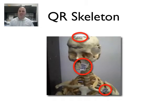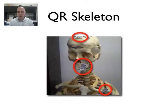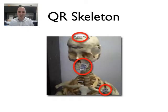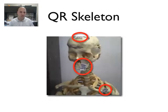I really like this one — it was done by a PE teacher in Australia. He wanted to help his kids have a more interactive experience learning the skeleton and the bones. What he did was create QR codes and attach them to different parts of the skeleton model. As kids scanned each one, they'd get different kinds of information they needed in order to complete the assignment.